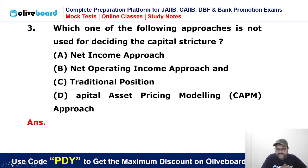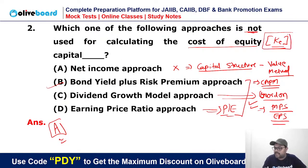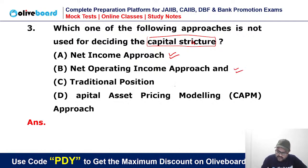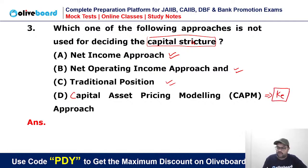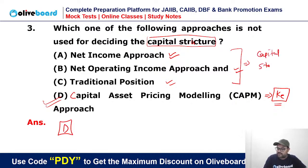Which one of the following approaches is NOT used for deciding the capital structure? Note the difference: the previous question asked which method is not used to calculate Ke; this question asks which is not used for capital structure. Net income approach, net operating approach, traditional approach — all are used for capital structure. But CAPM — Capital Asset Pricing Model — calculates cost of equity (Ke), not capital structure. So D is the correct answer. The other three methods are used in capital structure.